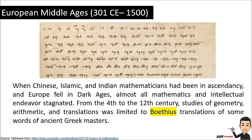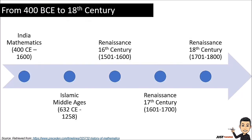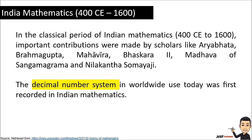Let's move forward to the European Middle Ages, from 301 CE to 1500. When Chinese, Islamic, and ancient mathematicians had been in ascendancy, Europe fell into the Dark Ages, and almost all mathematics and intellectual endeavor stagnated from the 4th to the 12th century. Studies of geometry, arithmetic, and translations were limited to Boethius's translation of some works of the ancient Greek masters — Aristotle and Plato.